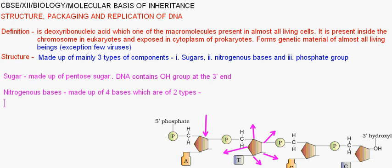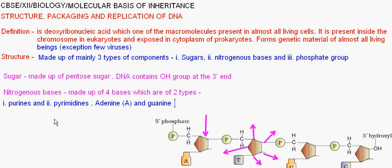Type one: Purines — purines consist of six-carbon rings. Type two: Pyrimidines — pyrimidines have five. Adenine, denoted as A, and Guanine, denoted as G, are purines. Cytosine, shown as C, and Thymine, shown as T, are pyrimidines.